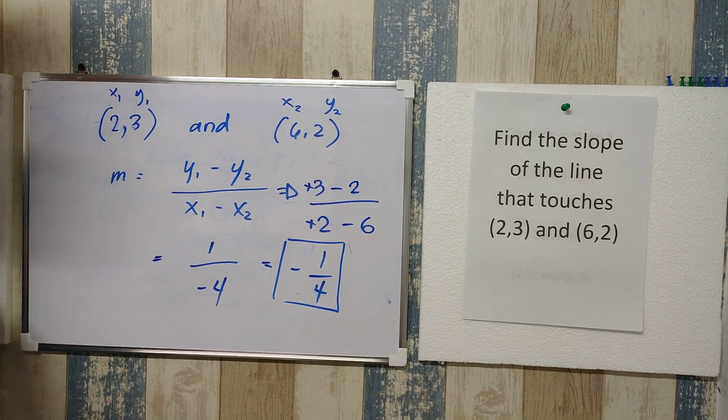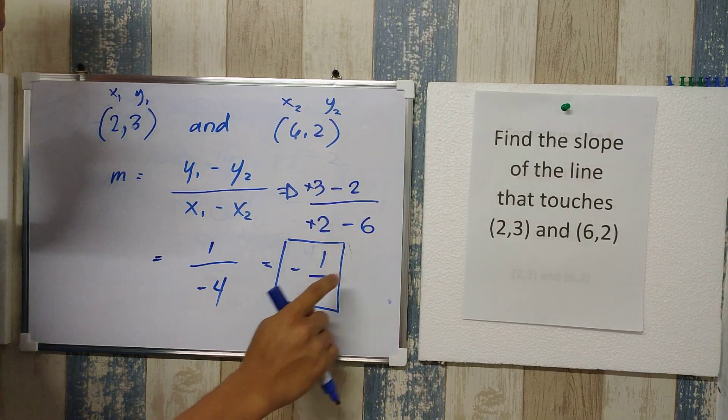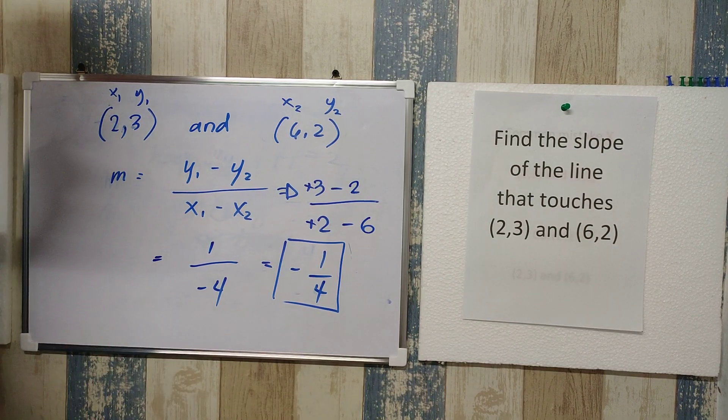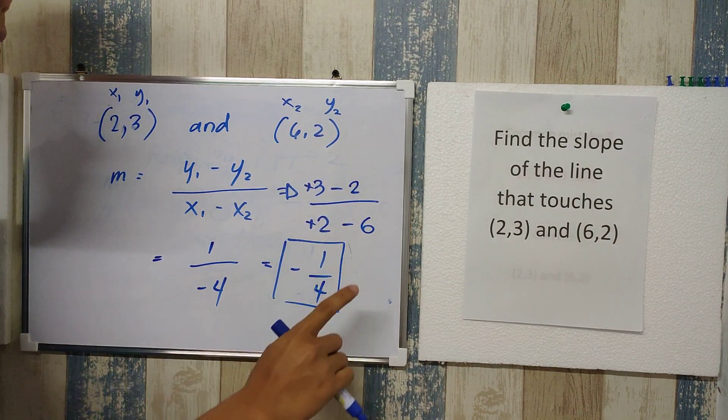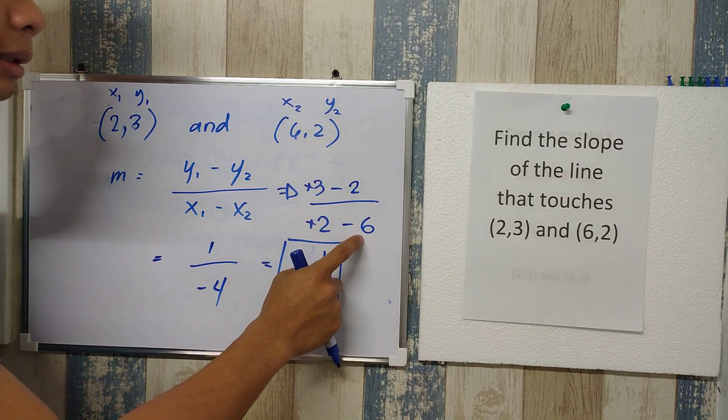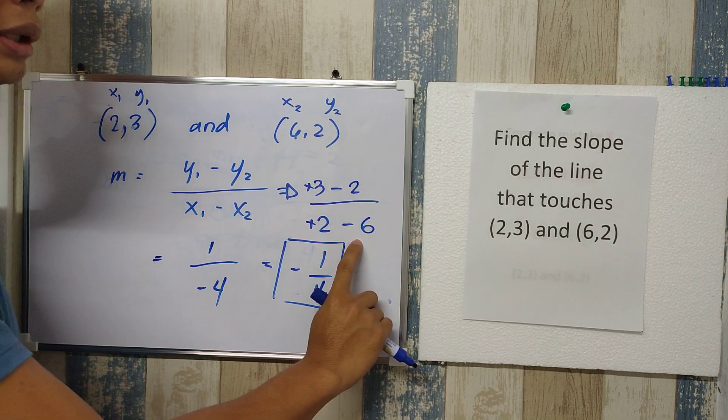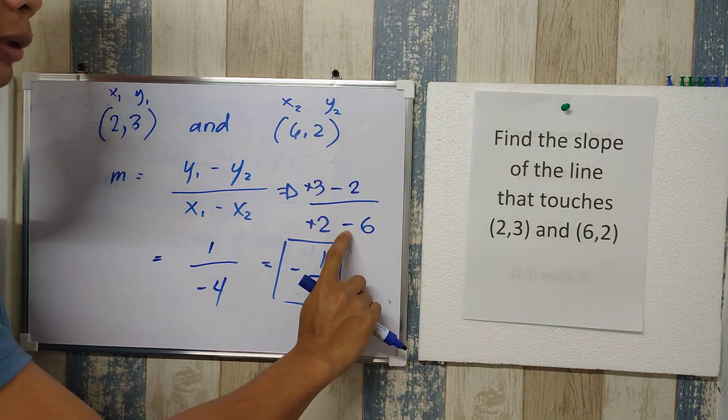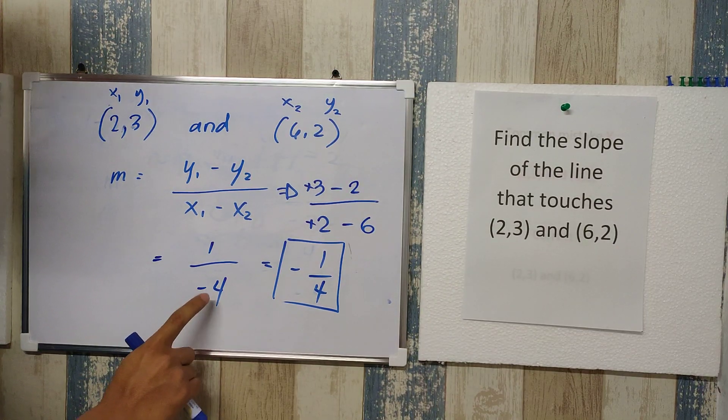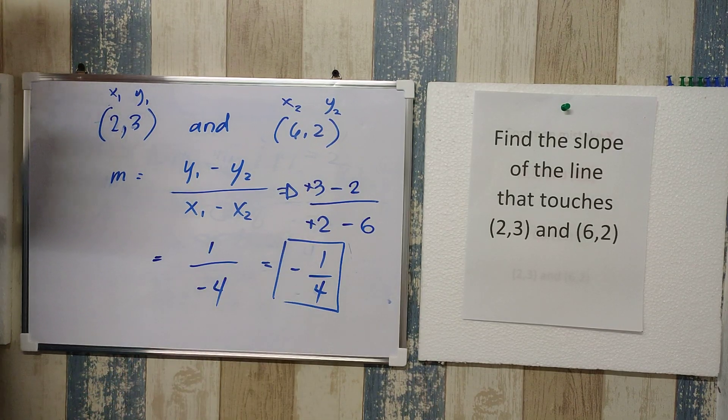3 minus 2 is 1. The sign of the bigger number which is 3 is positive, meaning our answer should be positive. On the other hand, on the denominator, it's 2 minus 6. Positive and a negative, two different signs. What we need to do is to subtract. On subtracting 2 and 6, we have 4. But again, think which is bigger, 2 or 6. 6 is bigger, so we need to take and copy whatever sign the 6 has. In this case, we have a negative. That's why the sign of the 4 here became negative. And as a final answer, we have here negative 1 fourth. That is our slope.